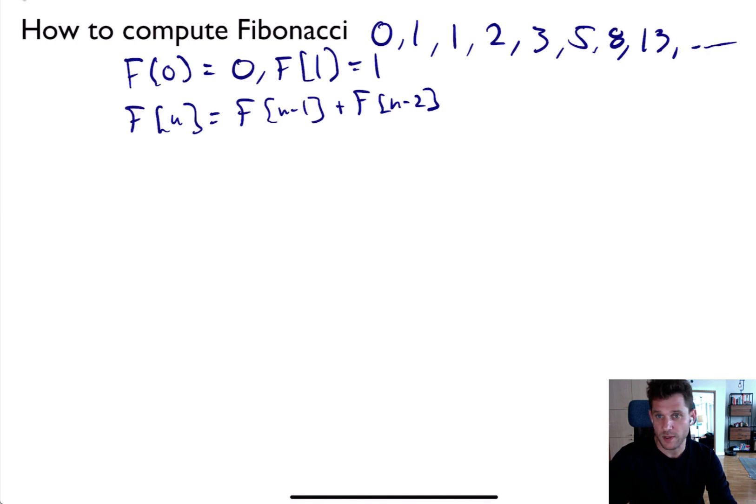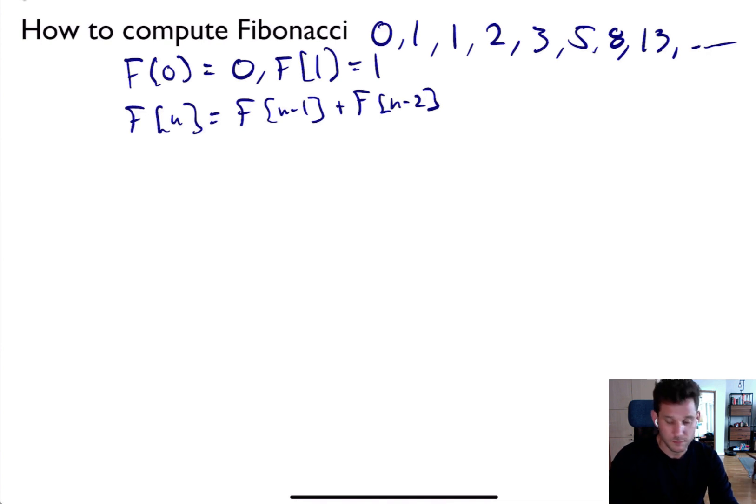Now what we're going to do is define some pseudocode that computes the Fibonacci numbers using one attempt. I'm actually not going to use pseudocode, I'm going to use Python. It's my favorite pseudocode.